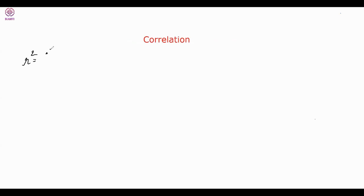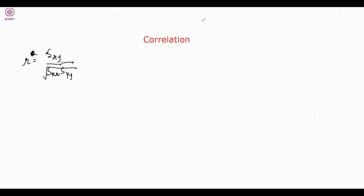So r is SXY divided by the product of the standard deviations of x and y — that is, √SSX times √SSY. We should understand where this naturally comes from, going back to the normal equations.